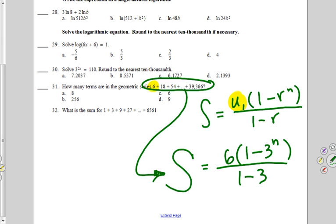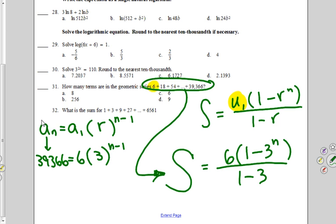If you wanted to use the formula, it's the last term is the first times r to the n minus 1. The last term, 39,366, equals the first term, 6, times r, 3, to the n minus 1. If you like using formulas, this is for you.